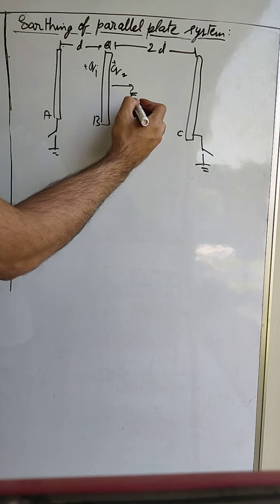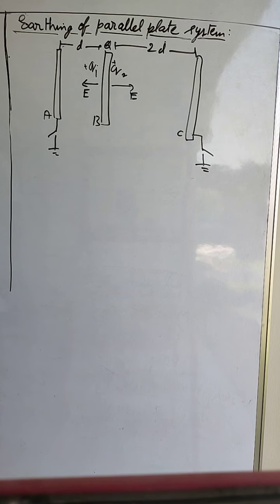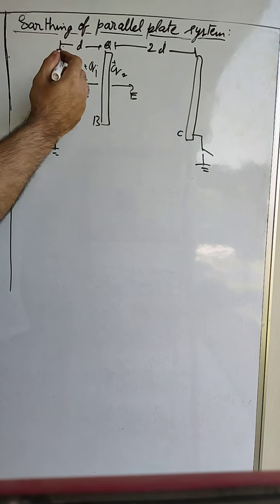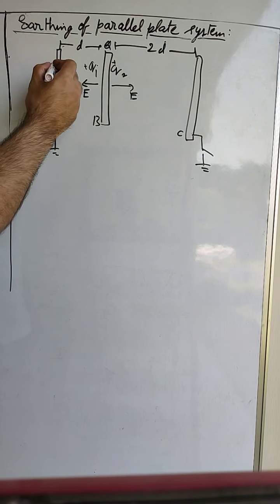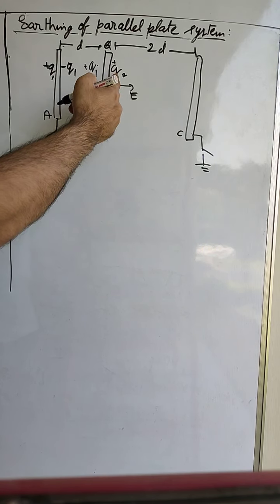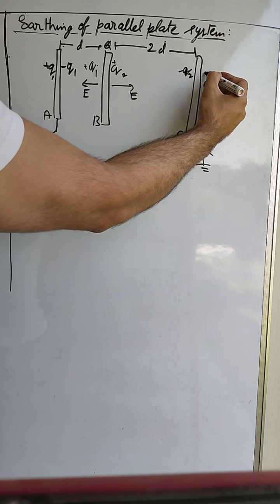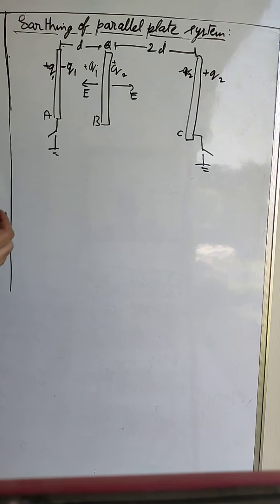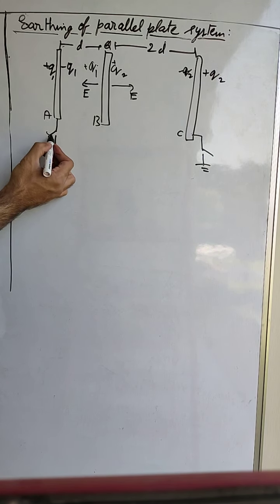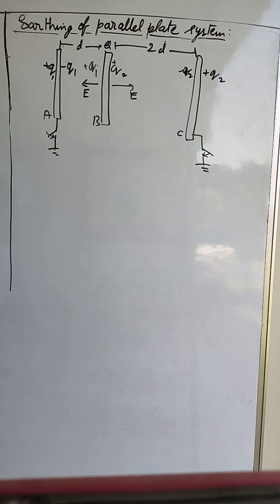Obviously both charges will be positive. The electric field due to Q1 will be in one direction and the electric field due to Q2 will be in the other direction. Because of +Q1, a charge of -Q1 will be induced on plate A and +Q1 will appear on its outer surface. Similarly, because of +Q2, a charge of -Q2 will deposit on plate C and +Q2 will deposit on its outer surface.